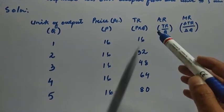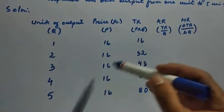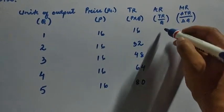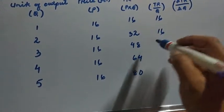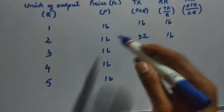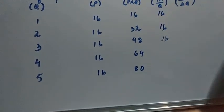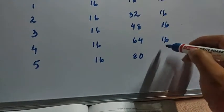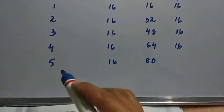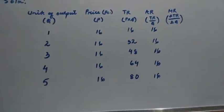After obtaining total revenue, we can easily find average revenue by dividing total revenue by the number of units produced. So 16 divided by 1 is 16, 32 divided by 2 is again 16, and 48 divided by 3 is again 16.